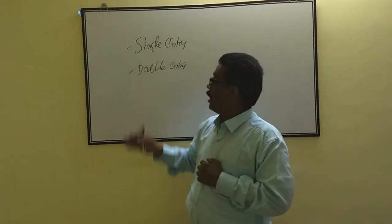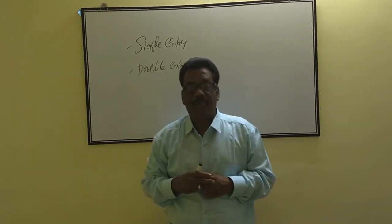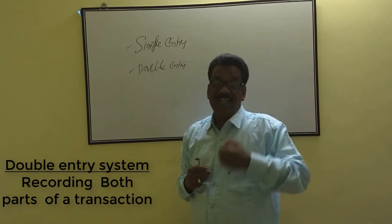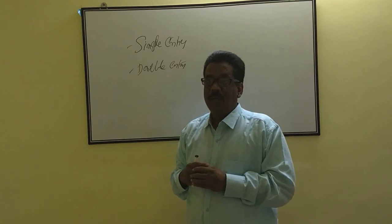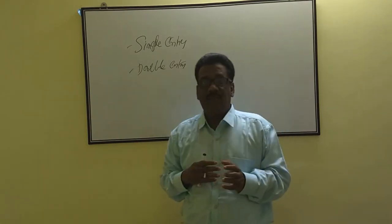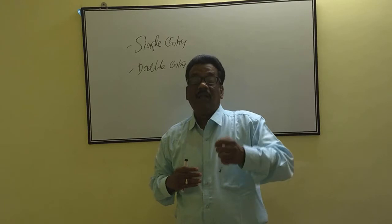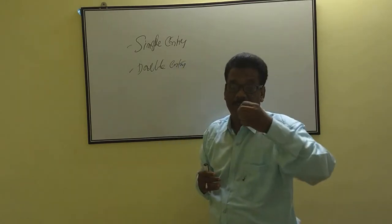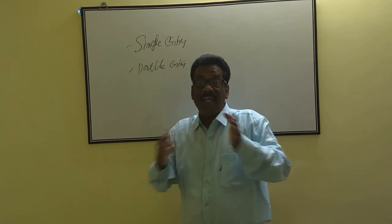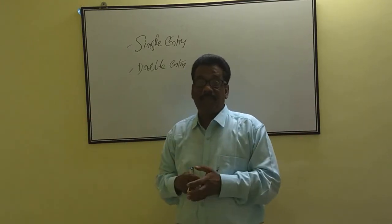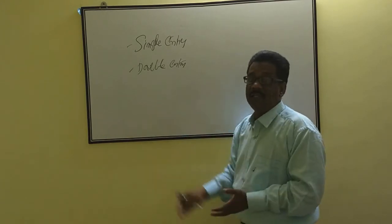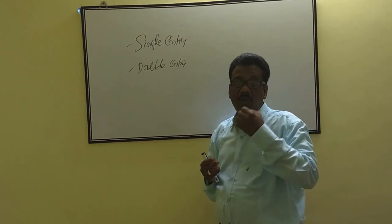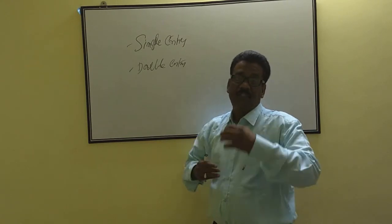The other system is the double-entry system. The double-entry system considers two parts of every transaction. Basically, this system works on the basis of a dual aspect concept. Accordingly, every transaction consists of two parts — one gives benefit to the business, and the other takes away benefit from the business. On those two principles, this system works.